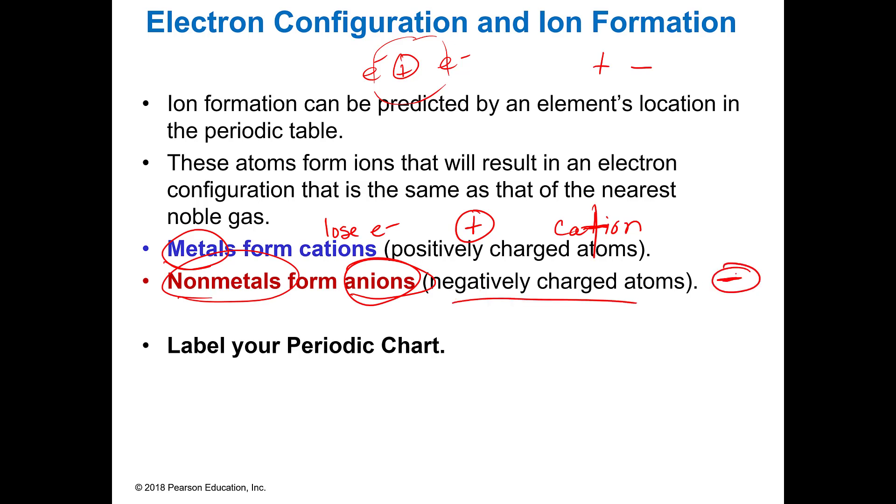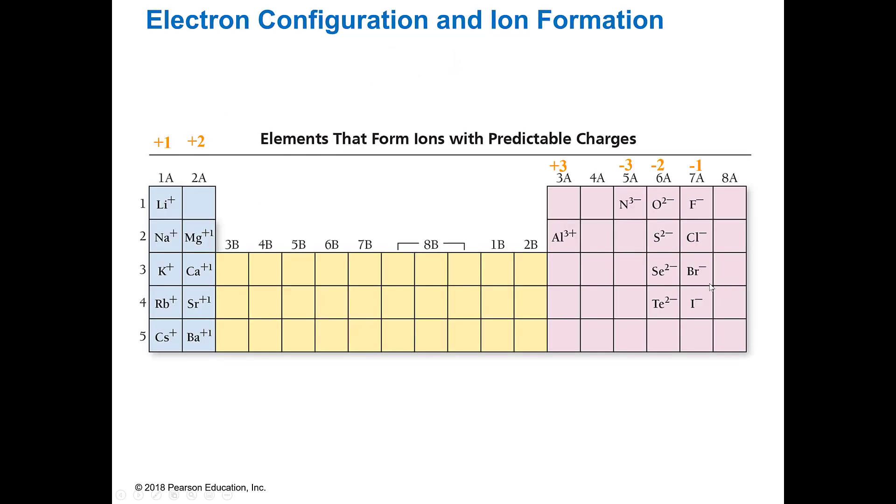And then the non-metals form anions and they are negatively charged. So to the left of the zigzag line they're going to be metals and form cations. To the right they're going to be anions and then if they're metalloids who knows. So you're going to label your periodic table so that you can help remember that.